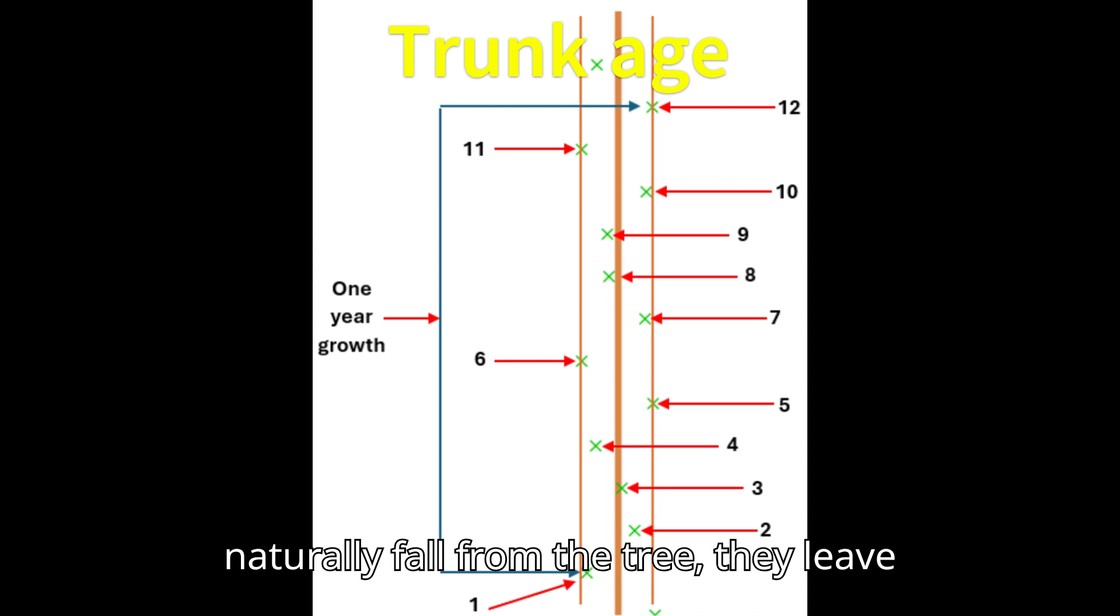As fronds naturally fall from the tree, they leave scars on the trunk. One-year growth is measured by counting twelve scars as it produces twelve fronds. Counting twelve scars from the tip of the bole provides an estimate of one year's growth.